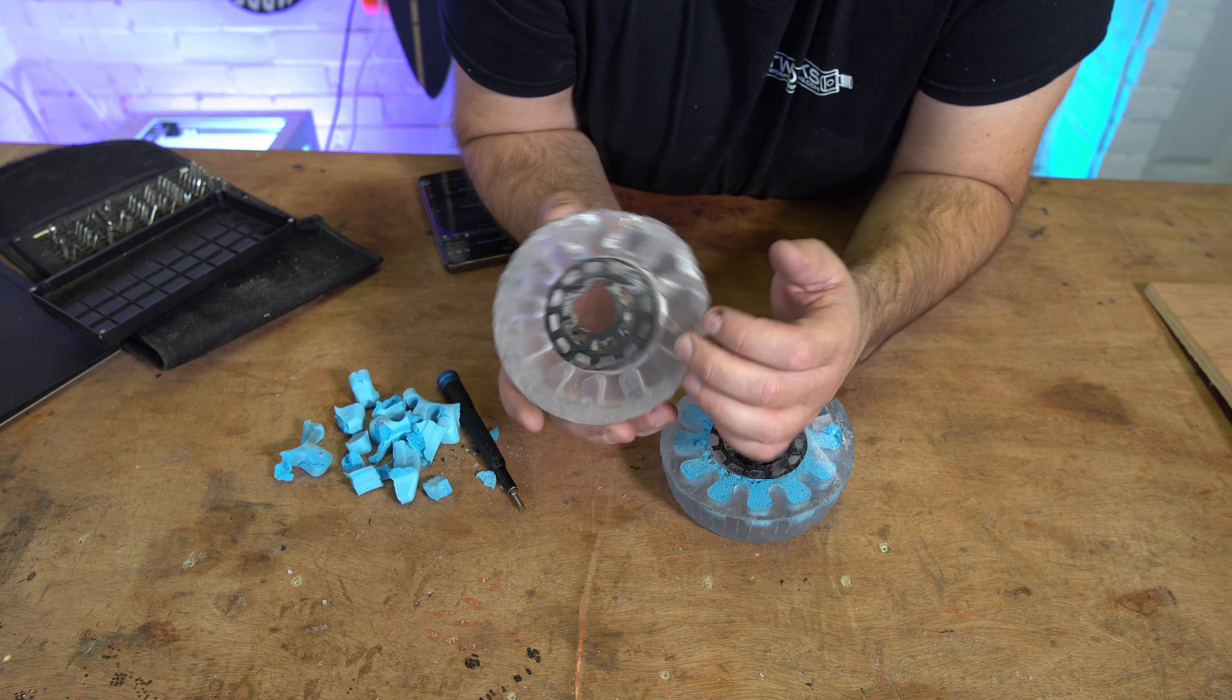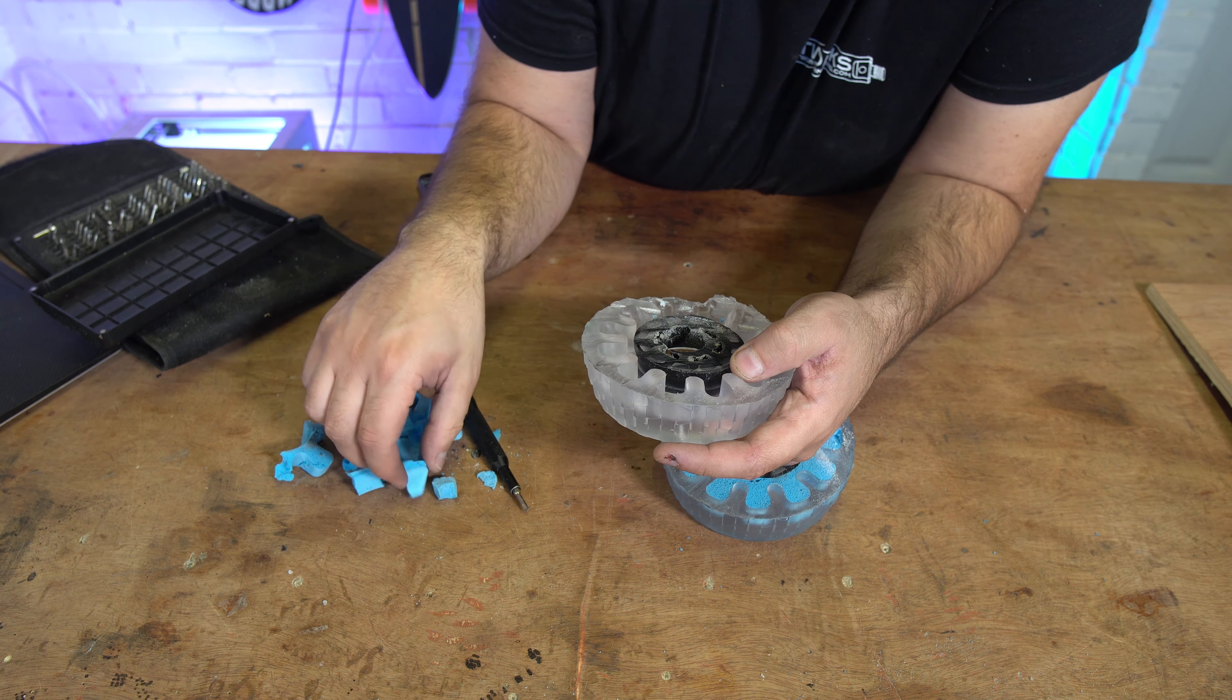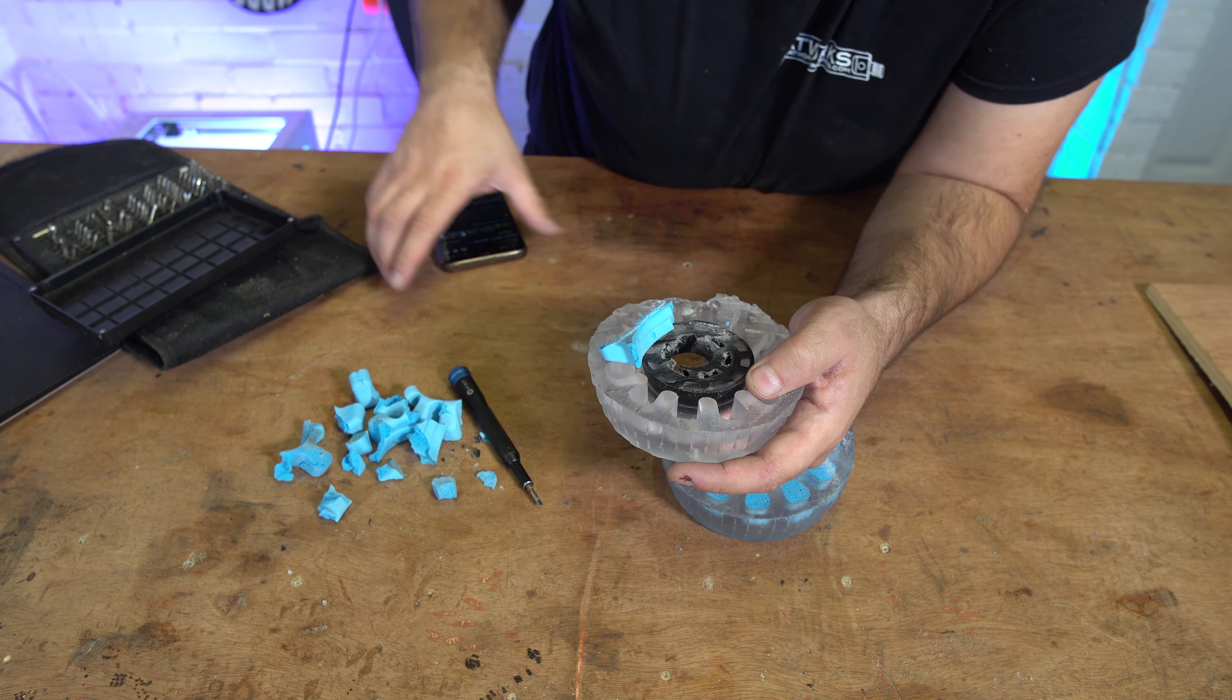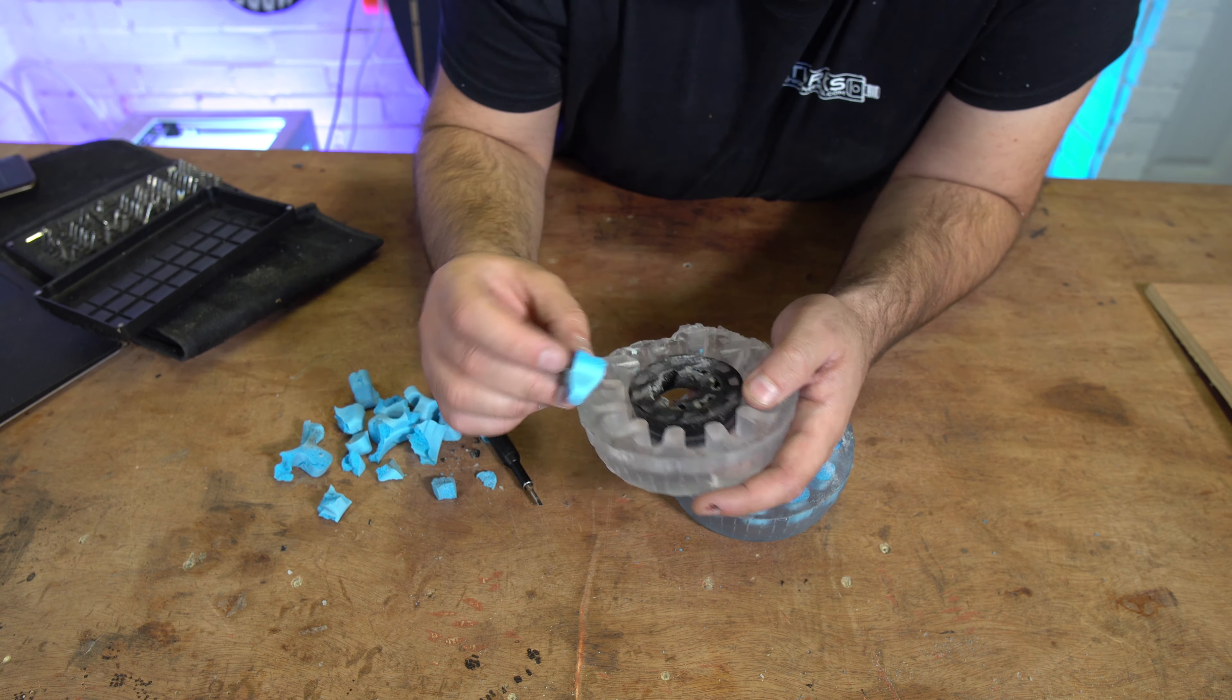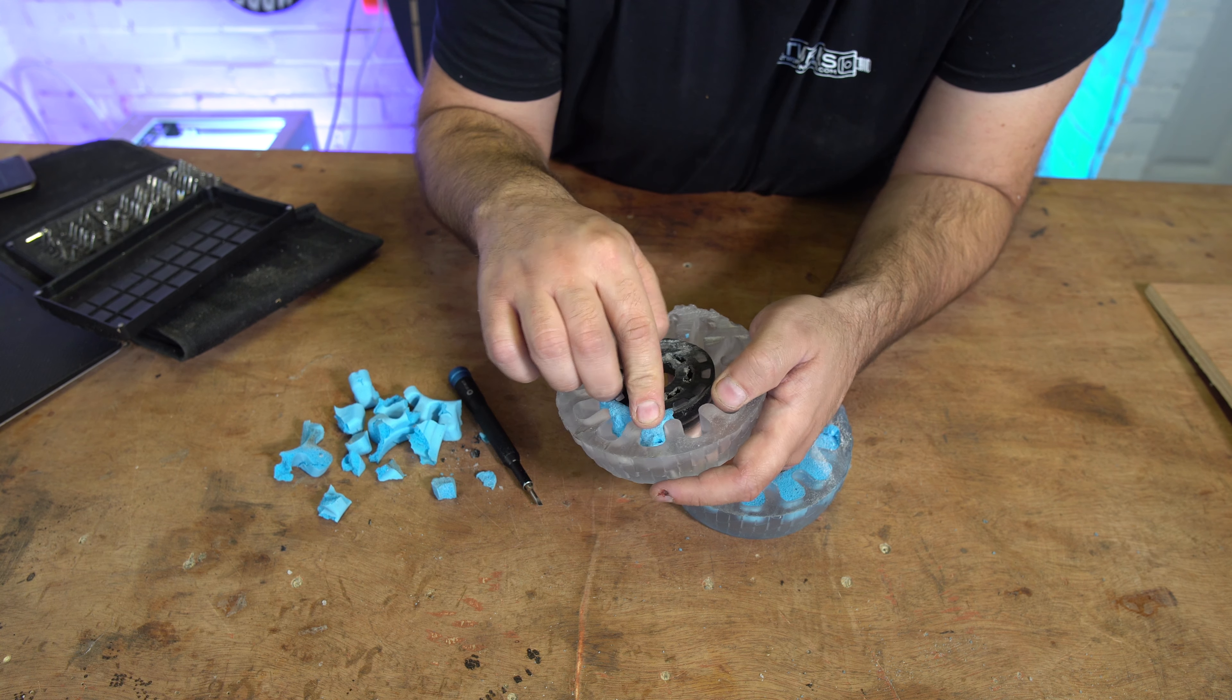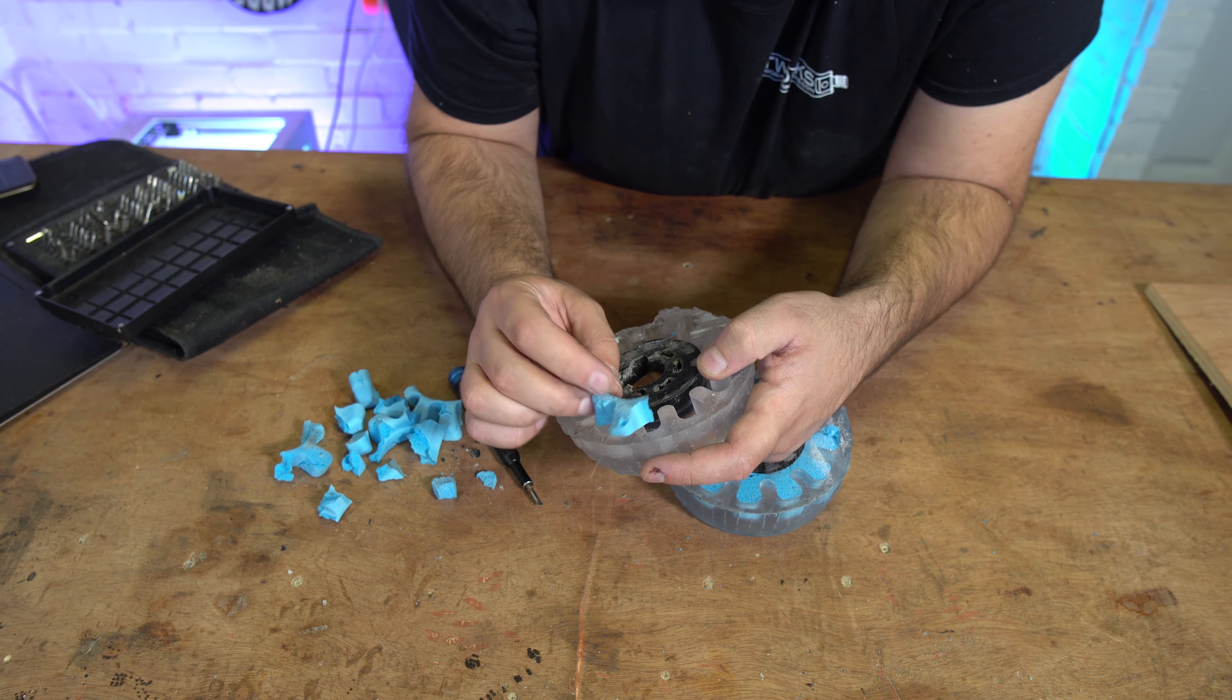Alright, there we go guys. Now with the foam out we can see this a bit clearer. I've pulled all the foam out of the wheel and none of it - I don't feel like it was stuck in there. It didn't feel like there was any adhesive holding it in. I don't know, when you look on the foam there's nothing.